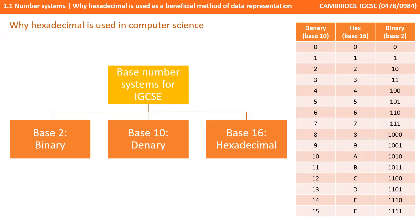So we'll start with a very quick recap. There are three base number systems that you need to be aware of for GCSE. Base 2 binary, base 10 denary and base 16 hexadecimal.